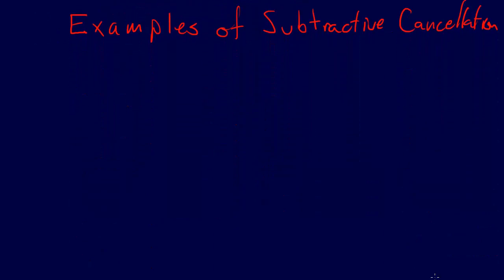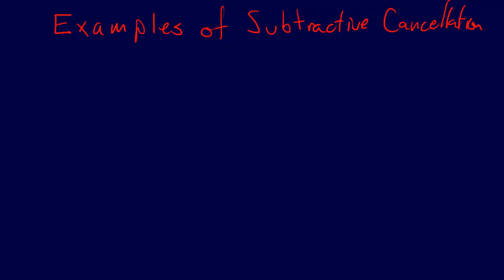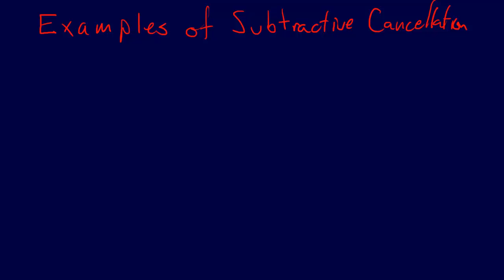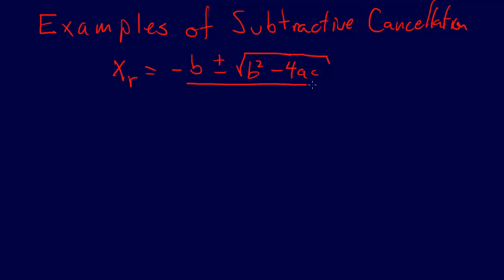So let's use this example. This is going to be a really nice one because, as you recall from the overview, the next major topic we're going to cover is numerically finding roots of equations. And this example is an example of subtractive cancellation that comes up as a result of the quadratic formula. We're probably all aware of the quadratic formula: the root is equal to negative b plus or minus the square root of b squared minus 4ac, all over 2a.